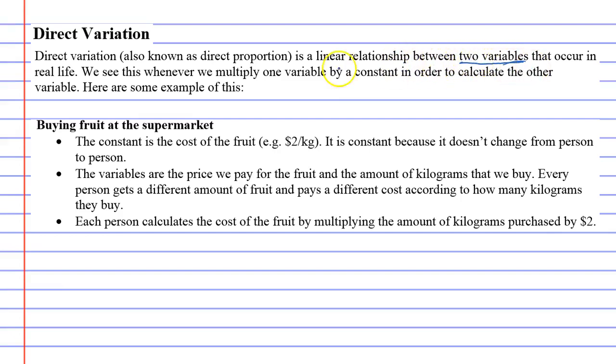Now, these two variables occur in real life, and we're going to talk about a real-life situation soon. We see this whenever we multiply one variable by a constant in order to calculate the other variable. This is the key here, and I'm going to illustrate this below.